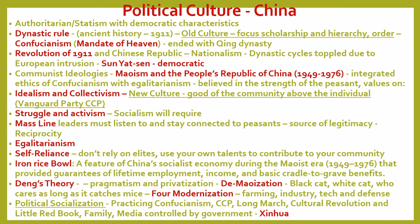The last Chinese dynasty was the Qin dynasty. China briefly attempted democracy with the revolution of 1911 under Sun Yat-sen, but that fell apart in the Chinese civil war between the nationalists and the communists in the 1930s and 40s. Finally, the communists under Mao Zedong won the civil war in 1949. They integrated the ethics of Confucianism with communist values of egalitarianism. Maoism focused on the strength of the peasant and placed value on idealism — truly becoming communistic.